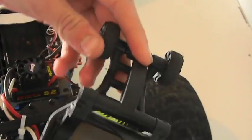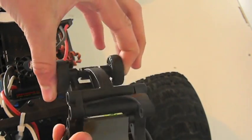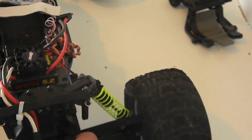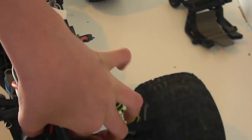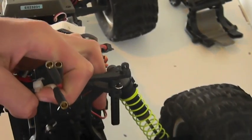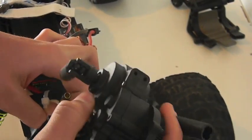So as you can see, I've removed the rear bumper. In this case it's a wheelie bar - you can just set that aside because we won't be needing that. And you can pull the gear cover out.